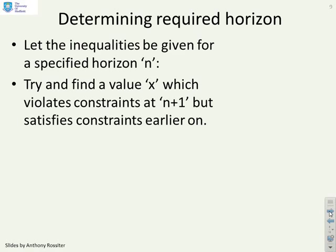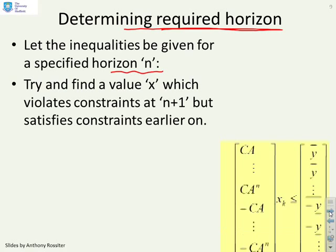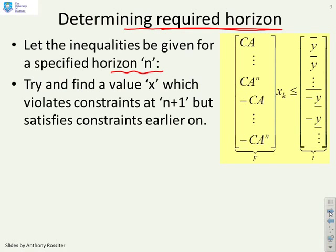So the question is then, how big a horizon do we need? So what we're going to do is assume the inequalities can be given for a specified horizon, n. There they are. So you'll notice we've just gone up to CA to the n minus CA to the n. So that's how we're going to define our inequalities, and I'm going to write that using f and t. So in other words, I've got fx less than or equal to t.